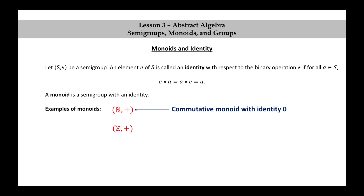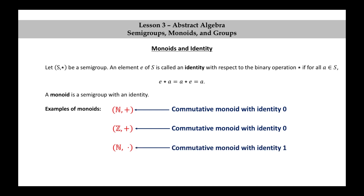Z plus is another example of a commutative monoid, also with identity zero. The natural numbers together with the operation of multiplication is a commutative monoid with identity one. Whenever you multiply any natural number by one you get that natural number. The integers together with the operation of multiplication is also a commutative monoid with identity one.